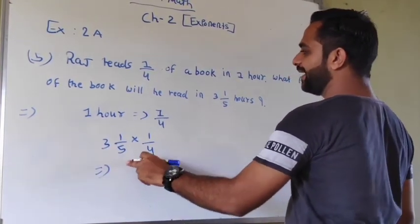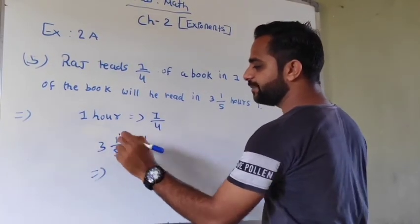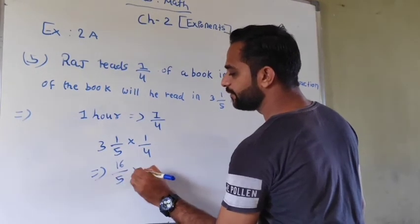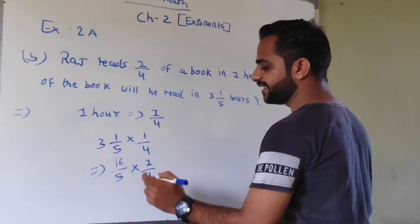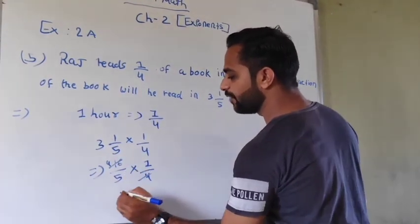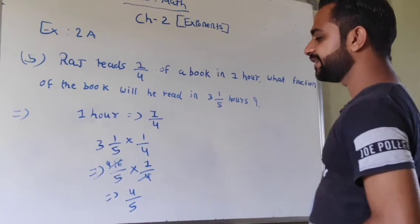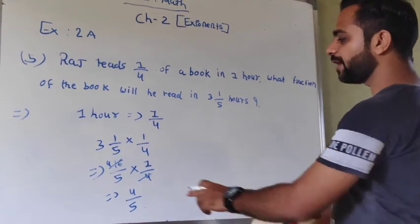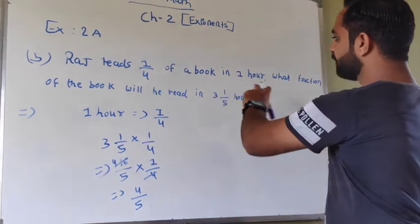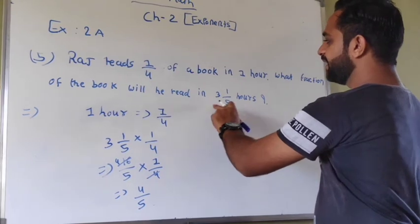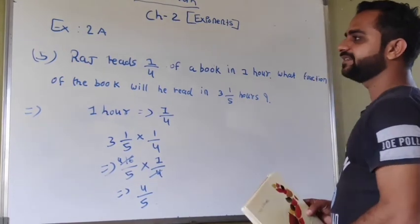So 5 times 3 is 15 plus 1 is 16. 16 upon 5 multiply by 1 upon 4. Now 4 and 16, 4 goes into 16 four times. So 4 times 1 is 4 upon 5. So the answer is 4 upon 5. So 4 upon 5 fraction of the book he will read in 3 and 1 upon 5 hours.